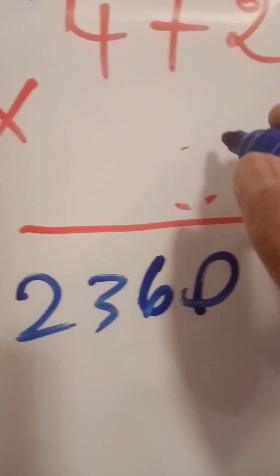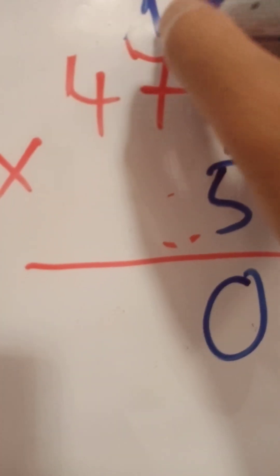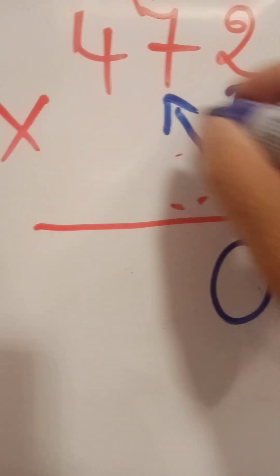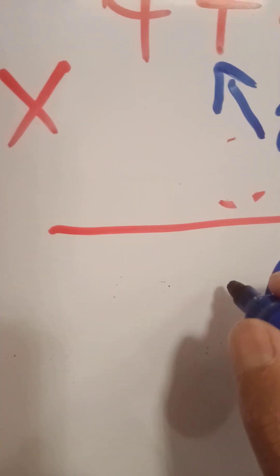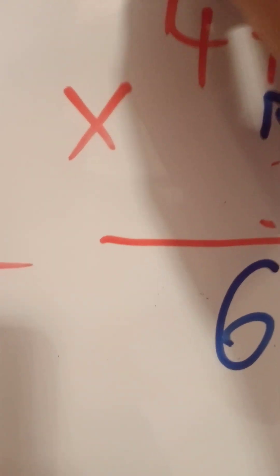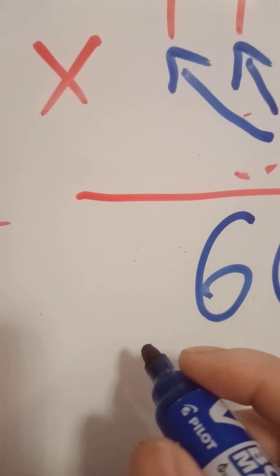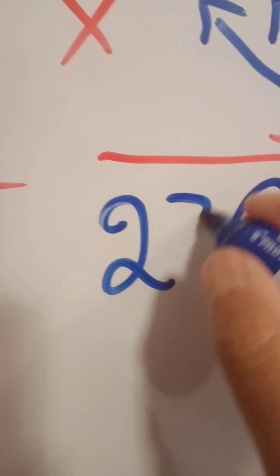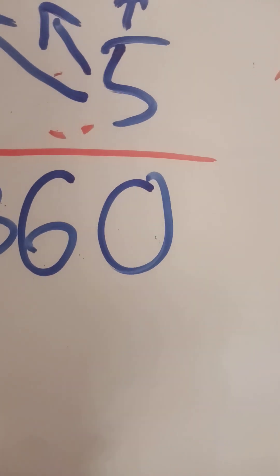Now 422 multiplied with five equals 2360. How do we do it? Five multiply with two is 10 — write zero, keep one. Five multiply with two is 35, plus one is 36 — keep three. Five multiply with four is 20, plus three is 23. So the answer is 2360 — correct!